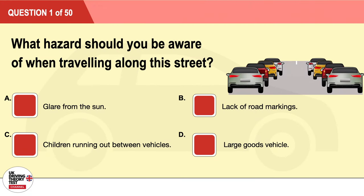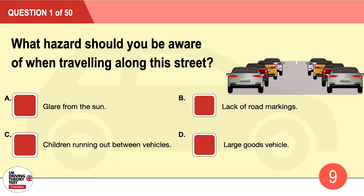Question 1: What hazard should you be aware of when traveling along this street? A: Glare from the sun. B: Lack of road markings. C: Children running out between vehicles. D: Large goods vehicle. The correct answer is C: children running out between vehicles.